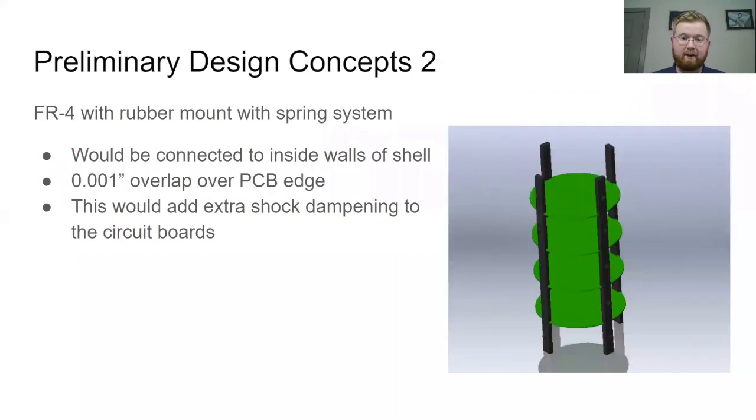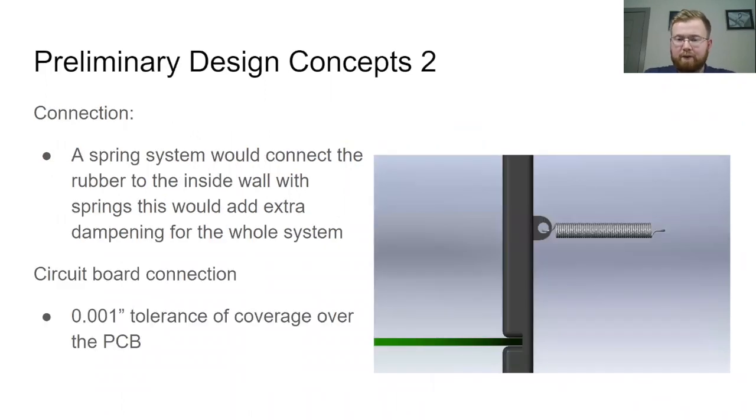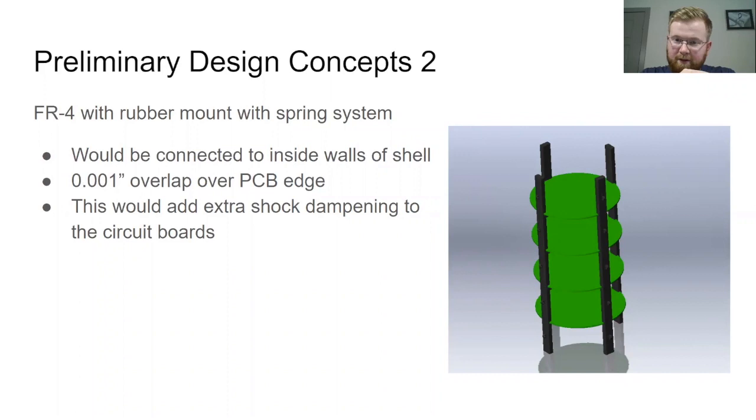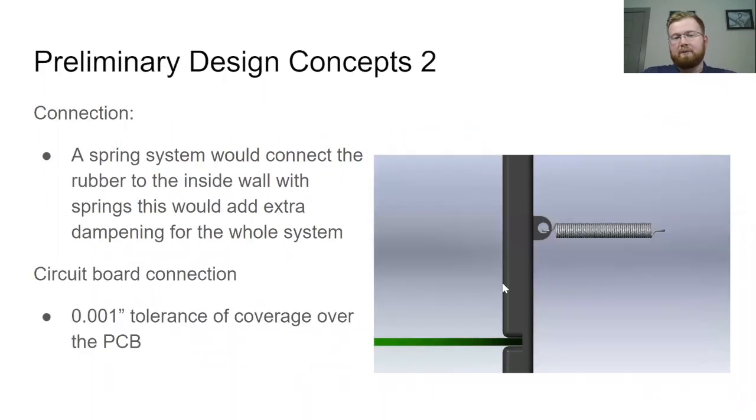All that's made of rubber so it should take away some of the vibration from the shock of a fall. Our second idea is to have a spring system. So each of these holes, these bumps will have a spring on it. This spring would connect to the rubber mounts and into the inside of the shell. And this would cause even more dampening to help protect the circuit boards.